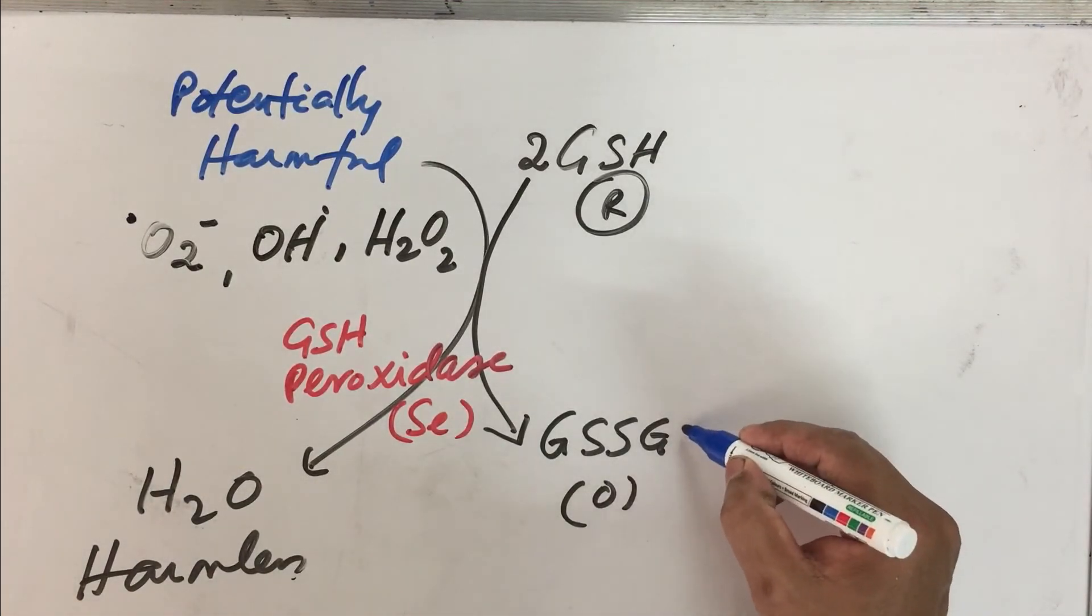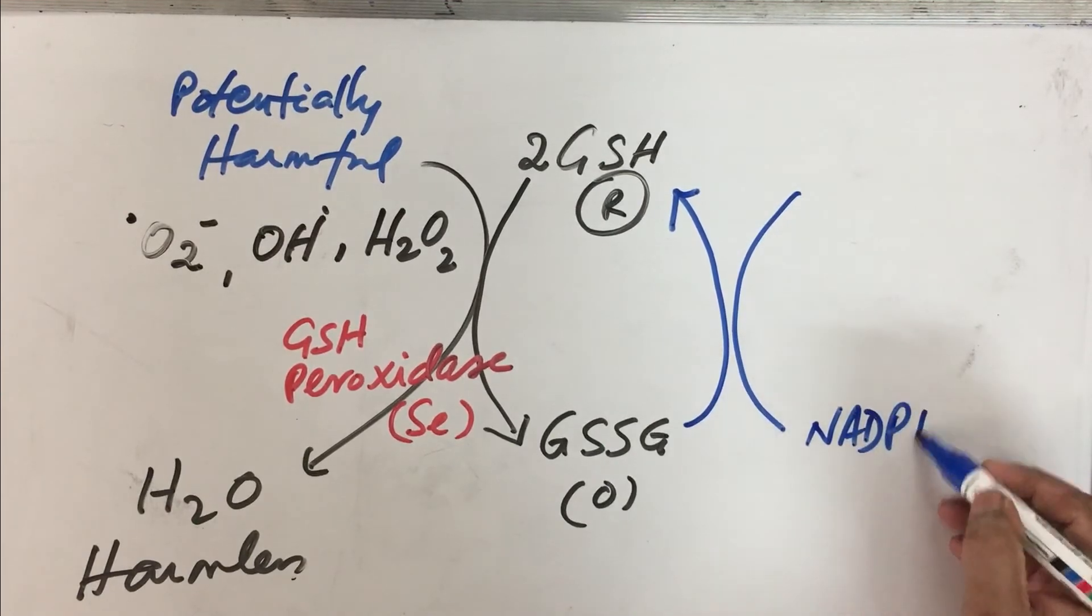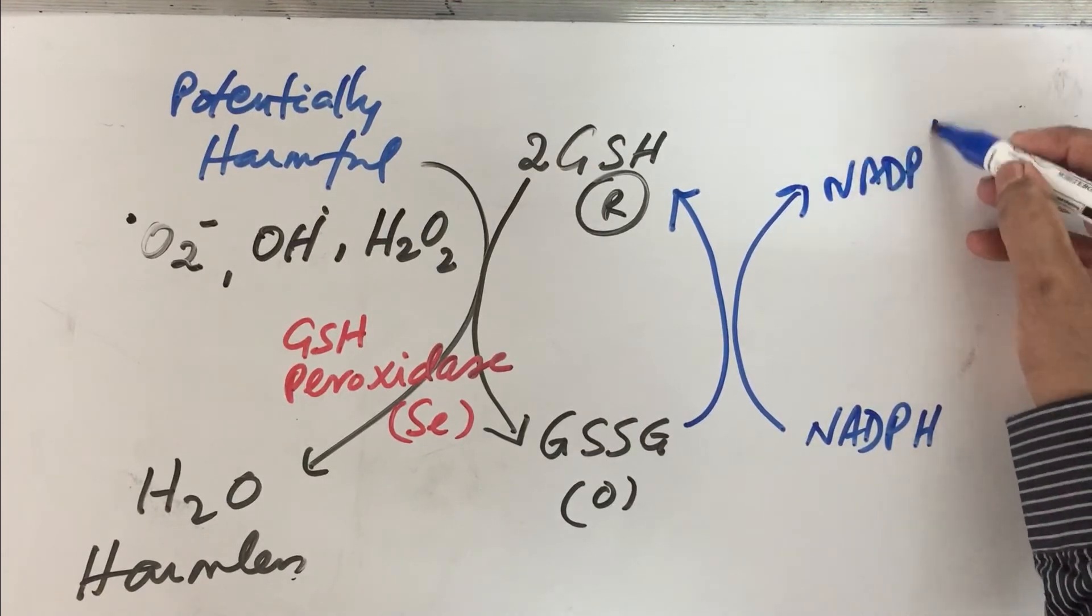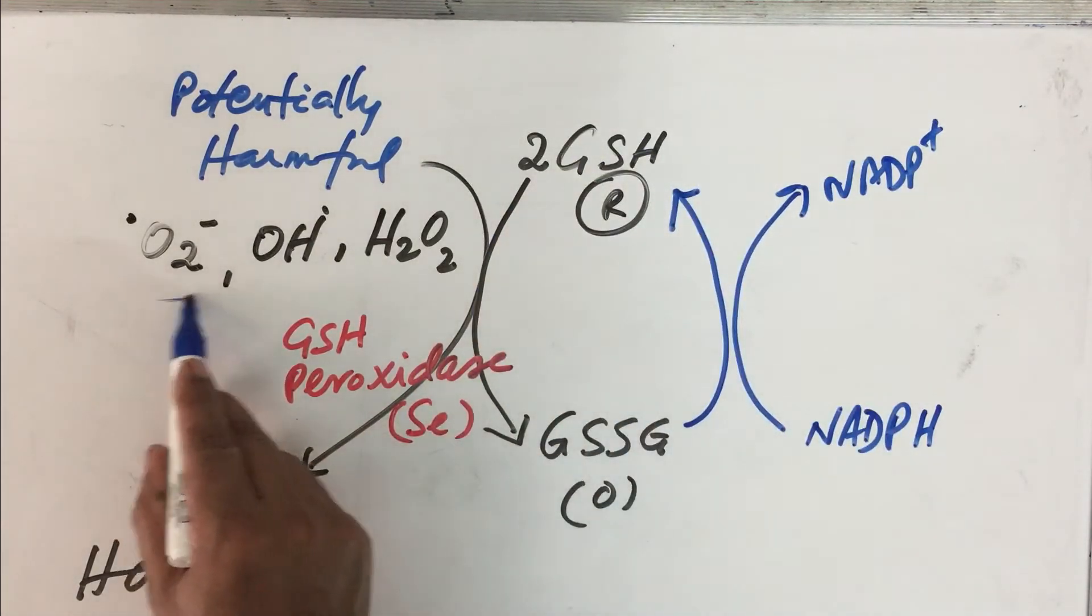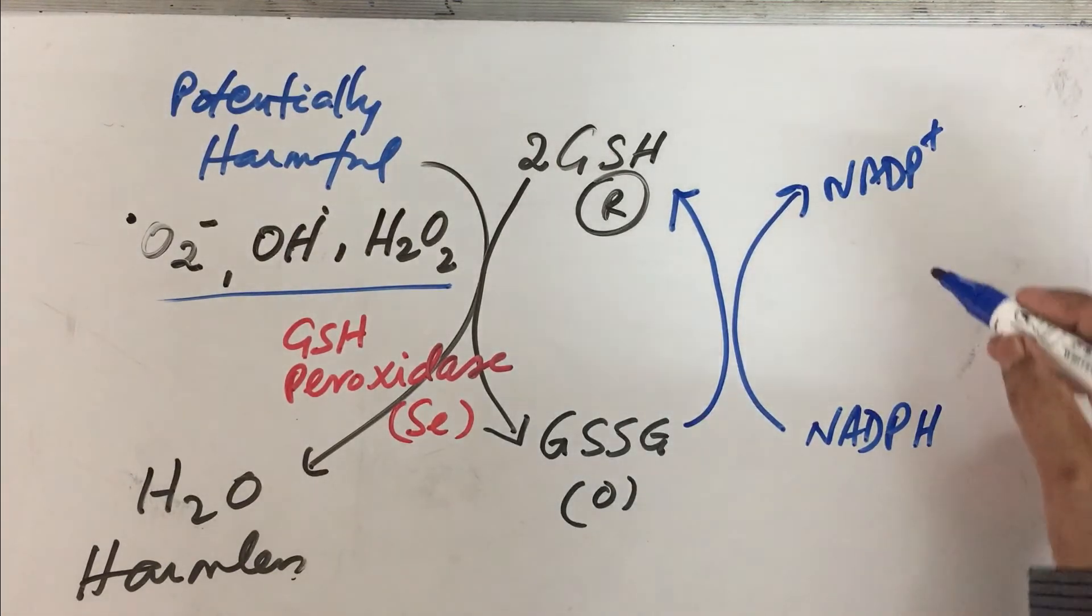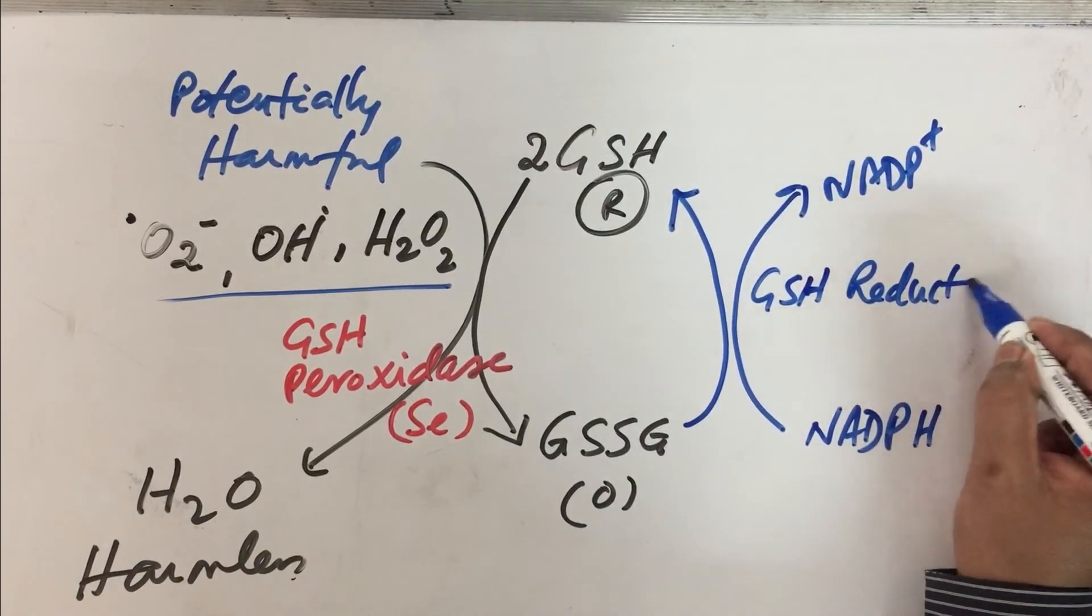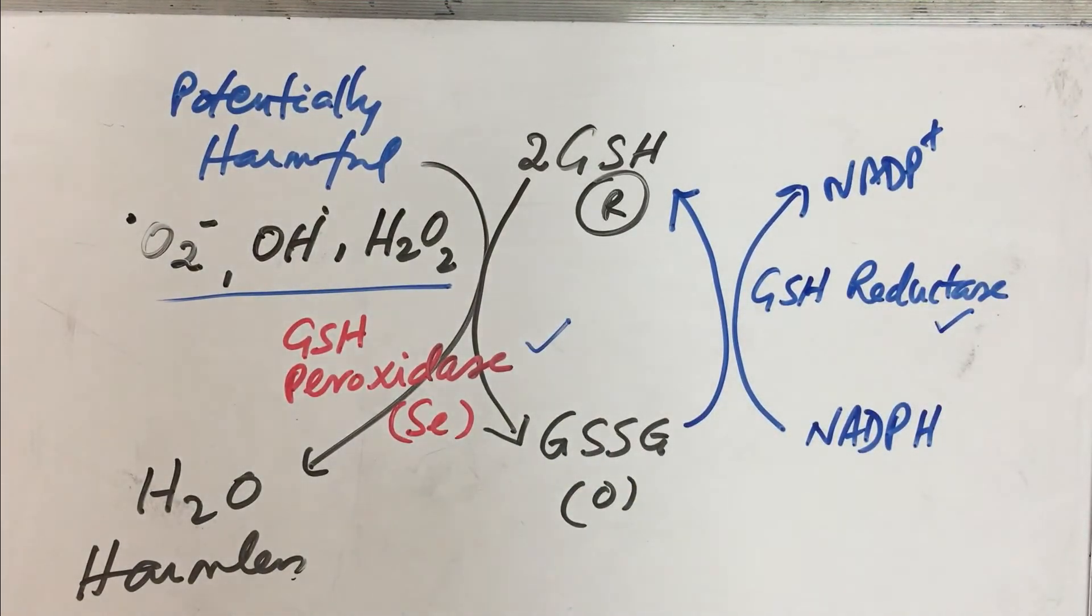How do we get the reduced form of glutathione back? This is done with the help of the NADPH which is produced through the pentose phosphate pathway. A constant supply of NADPH through pentose phosphate will ensure that these free radicals are kept in control. This reaction is catalyzed by glutathione reductase. By the activity of these two enzymes, glutathione peroxidase and glutathione reductase, cell membrane integrity is maintained.